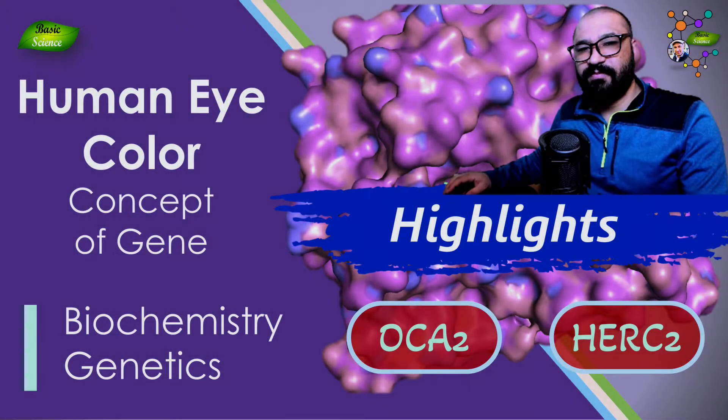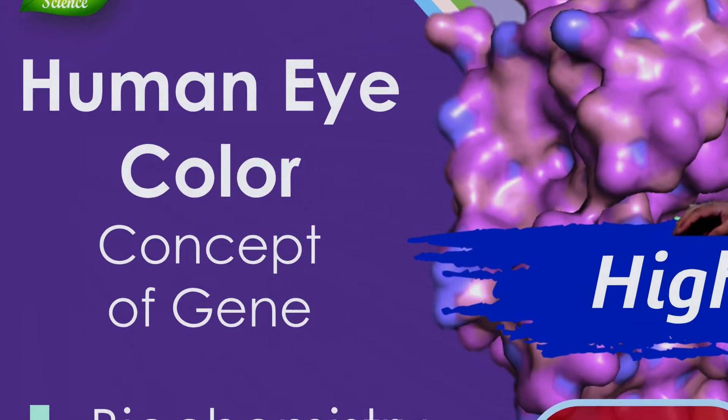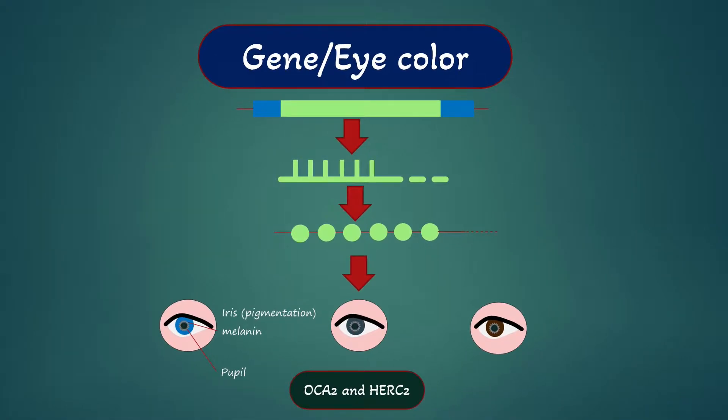In the previous video we discussed some of the key points of this lecture series and in this specific video I will explain the concept of gene by taking the example of human eye color.